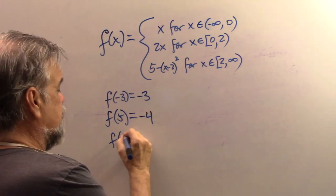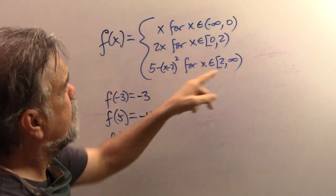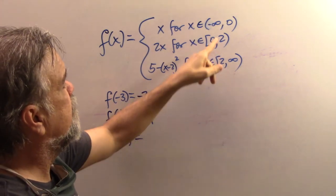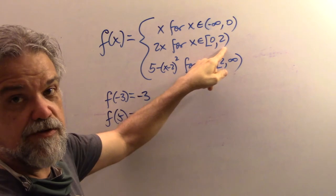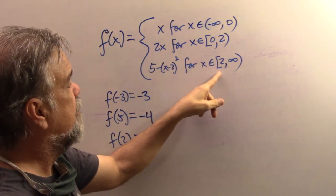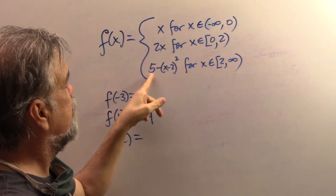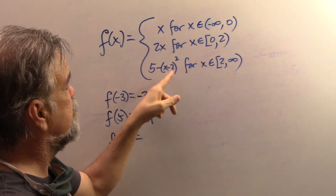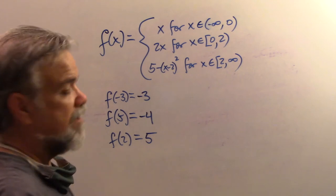And what about F of two? F of, hmm, is it this one or is it this one? Well, this one does not include the two, but this one does include the two. It's this one. So this will be five minus two minus two squared. Well, right.